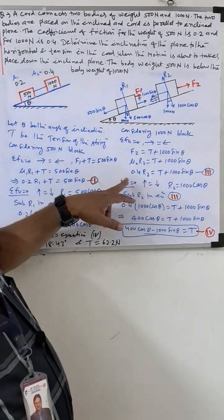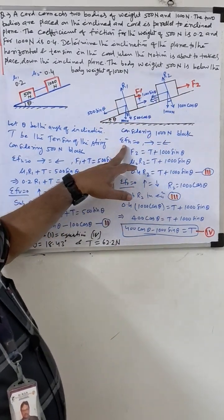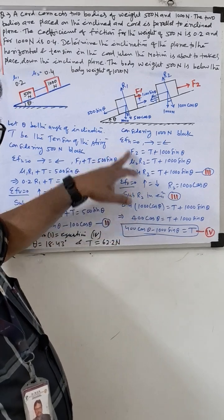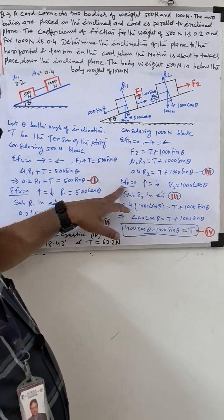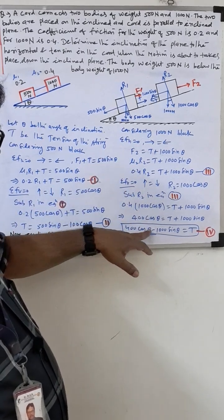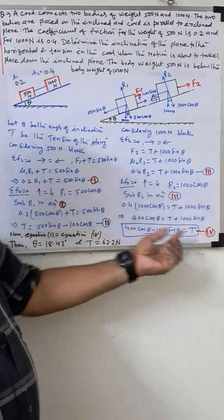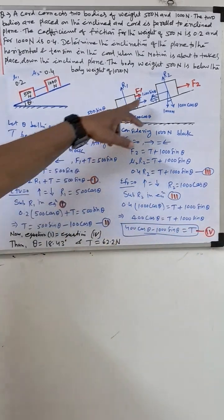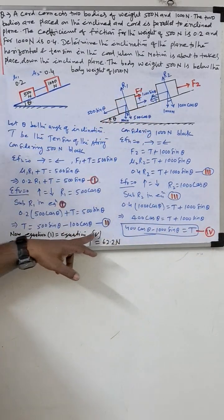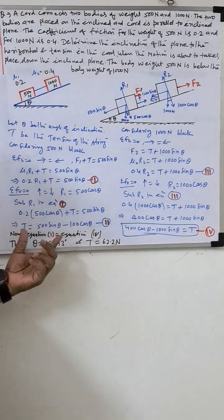Similarly, from the 1000 newton block, we apply the two equilibrium equations: sigma F equal to zero and sigma F equal to zero. We get 400 cosine theta minus 1000 sine theta equals T. Since the tension is equal and opposite in both equations, we set equation one equal to equation four.